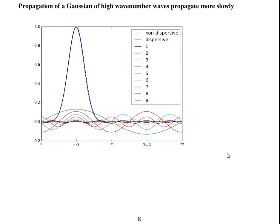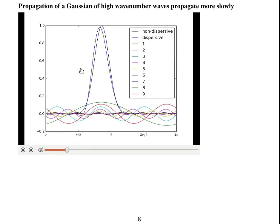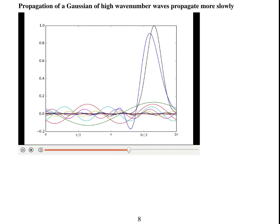However, if high wave number waves propagate more slowly, then the Gaussian will change shape. So the black line shows what happens if it's not dispersive, and the blue line is the sum of the wave numbers with high frequency, high wave number waves moving more quickly. So it is dispersive. You can see here that the blue line changes shape.